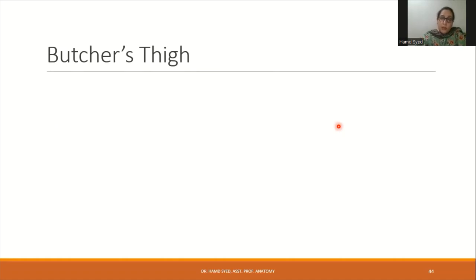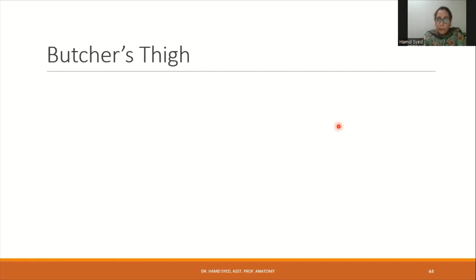The femoral triangle is a sensitive region because it contains the femoral vessels. Any penetrating injury such as a stab wound can cause massive blood loss — a condition known as butcher's thigh. Damage to the femoral nerve in this region can also cause paralysis of the lower limb, highlighting the clinical importance of this area.